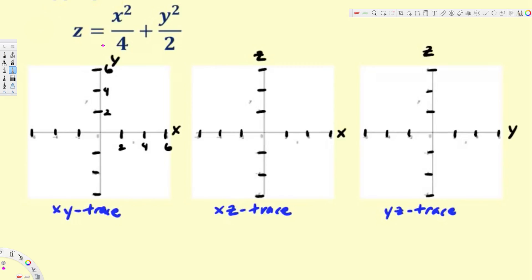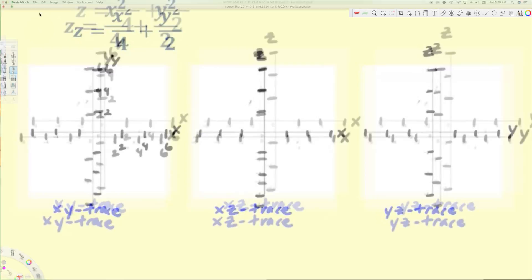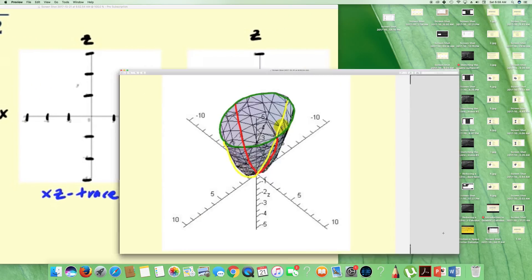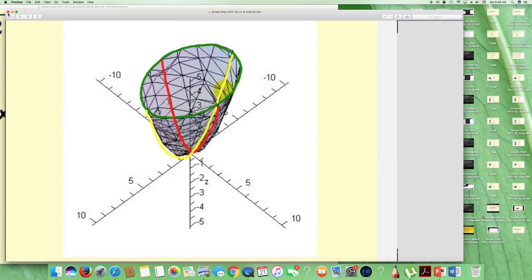In this video we are going to see how to draw traces for an elliptical paraboloid. The standard form for an elliptical paraboloid should look like this, and the graph of the elliptical paraboloid will look like this.